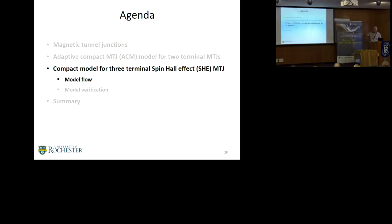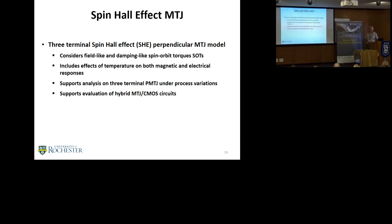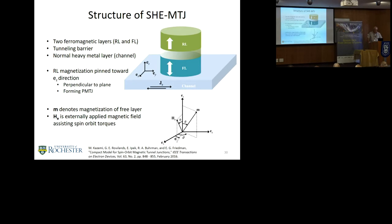Now I'm going to look at a three-terminal spin-Hall effect model for the MTJ. This model is particularly for perpendicular MTJs. It considers both field-like and damping-like spin-orbit torques, SOTs. It includes both temperature effects on magnetic and electrical responses. It supports process variations, and we show that it actually combines nicely with MTJs with CMOS. Here's the PMTJ in this structure. Two ferromagnetic layers, both the free and reference layer with a tunneling barrier and a channel structure to control the flow. Here's the diagram to describe the magnetic field with respect to different angles.